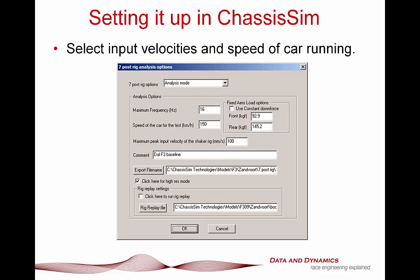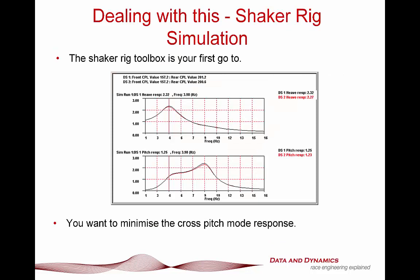A quick word on how you set this up: it's a little different from a track replay or lap time simulation. You're focusing on a particular speed or car condition. Here I've set up a test for 150 km/h. I've put in the input velocity of the road, and as a rough rule of thumb, I typically look at my damping velocities and divide them — it gets you by. Then specify an export file name. That ability gives you a real window into how to deal with this, and it has saved my neck — and my customers' necks — on multiple occasions.